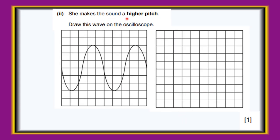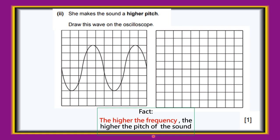She makes the sound a higher pitch. The factor that affects pitch is frequency. The original wave has a frequency of 2 complete oscillations. To produce a sound with a higher frequency, draw more than 2 complete oscillations. The higher the frequency, the higher the pitch of the sound.